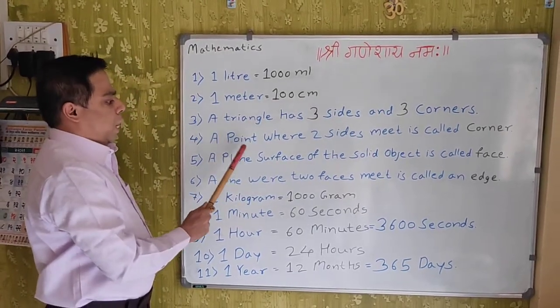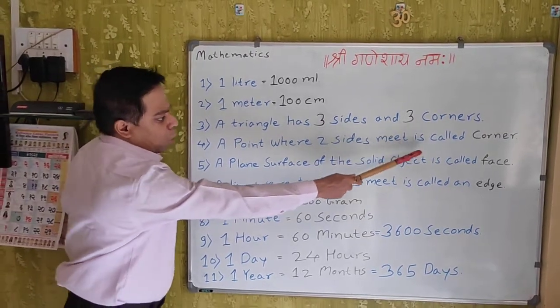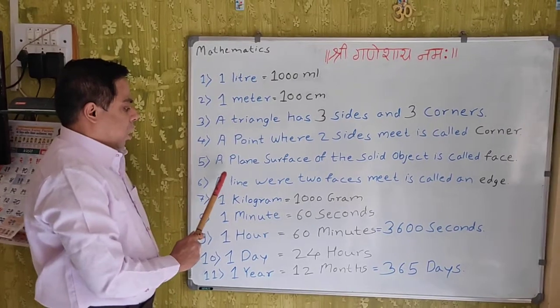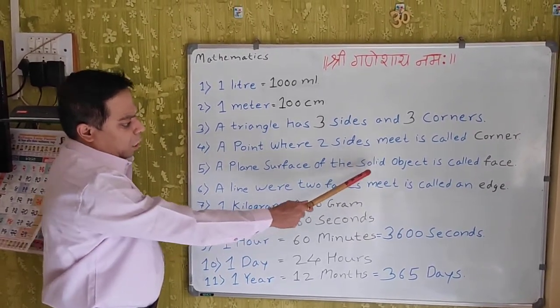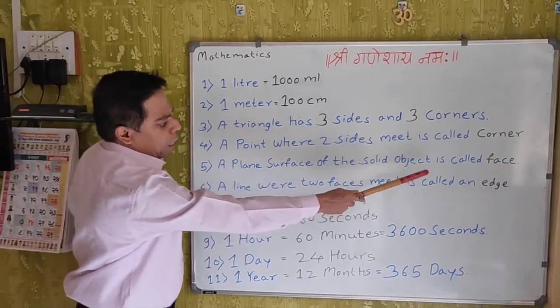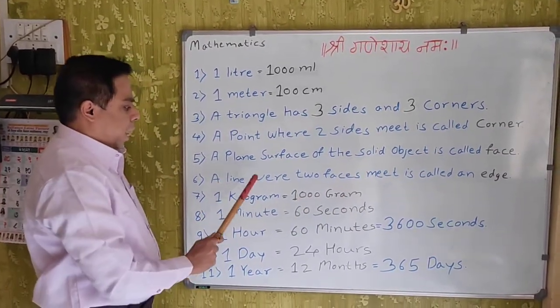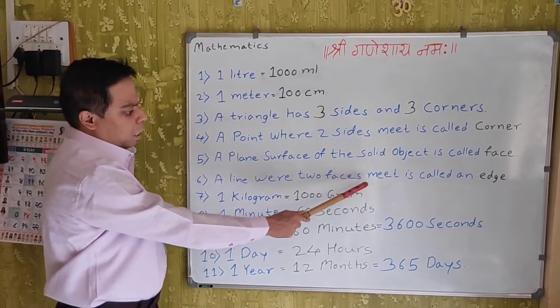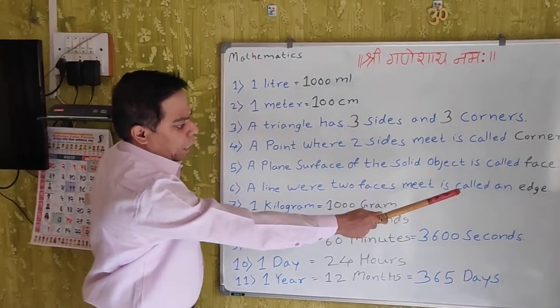A point where 2 sides meet is called corner. A plane surface of the solid object is called face. A line where 2 faces meet is called edge.